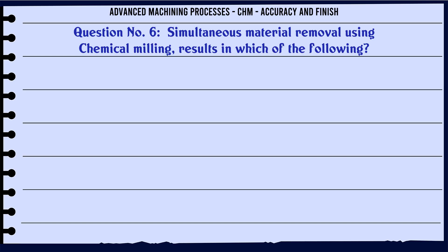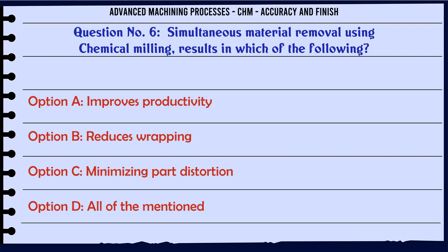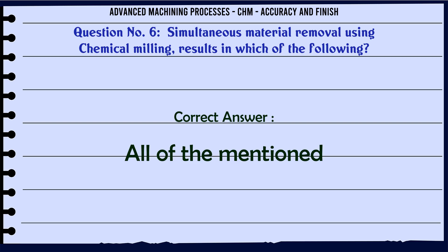Simultaneous material removal using chemical milling results in which of the following? A. Improves productivity. B. Reduces warping. C. Minimizing part distortion. D. All of the mentioned. The correct answer is all of the mentioned.